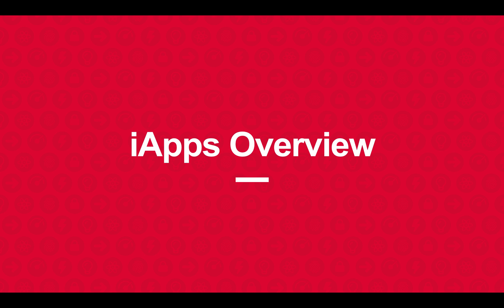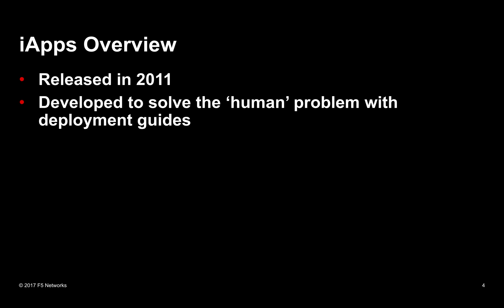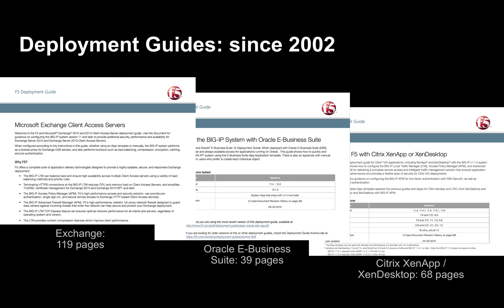Quick background on iApps. We released them way back in 2011. They were developed to solve the human problem with deployment guides. We started developing these way back in 2002 — awesome deployment guides we sat down with our partners like Microsoft and did all the hard work of coming up with every setting to make applications fast, available, and secure.